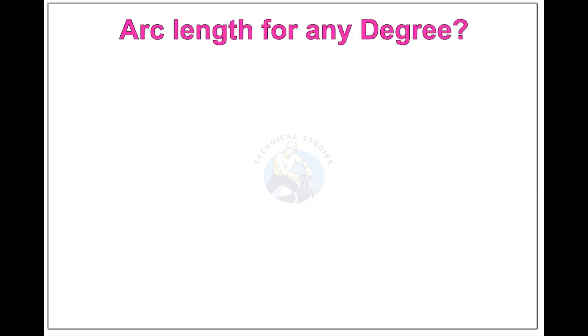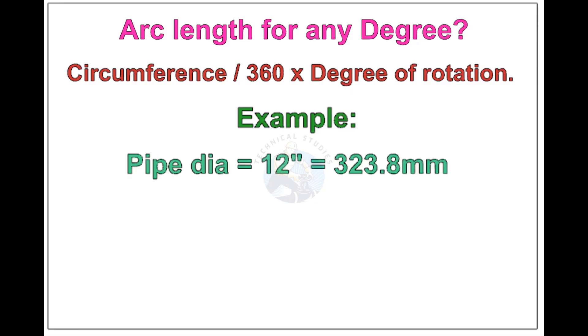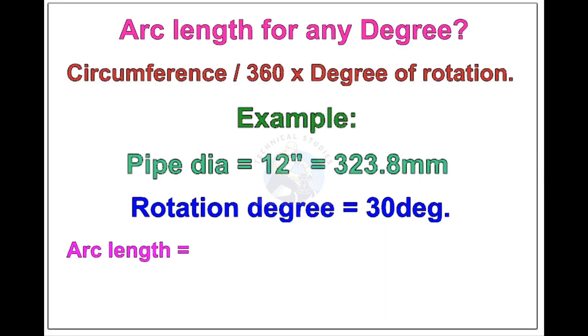Arc length of any degree: Circumference of the pipe divided by 360 into the degree of rotation. Let us check the arc length of 12 inch pipe rotated 30 degree. Apply the formula. The answer is 84.8 millimeters.